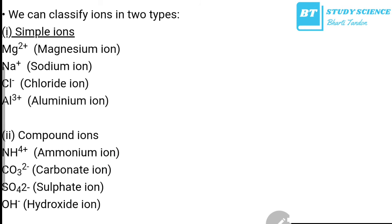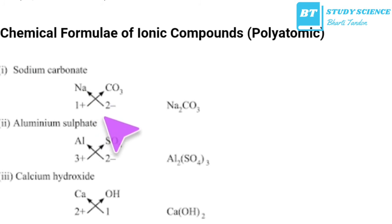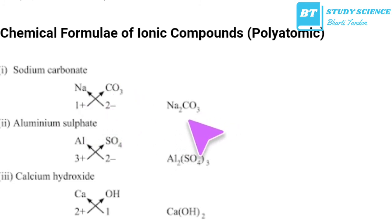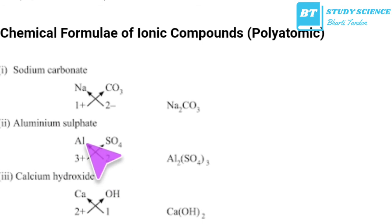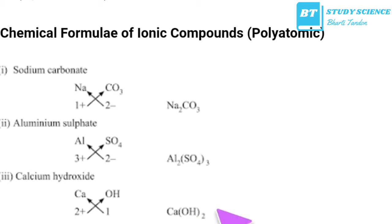Chemical formulas of ionic compounds: sodium carbonate — sodium has valency 1, CO₃ has valency 2 negative; cross multiply to get Na₂CO₃. Aluminium sulfate — aluminium has valency 3 positive, SO₄ has valency 2 negative; formula is Al₂(SO₄)₃. Calcium hydroxide — calcium has valency 2 positive, OH has valency 1; formula is Ca(OH)₂.